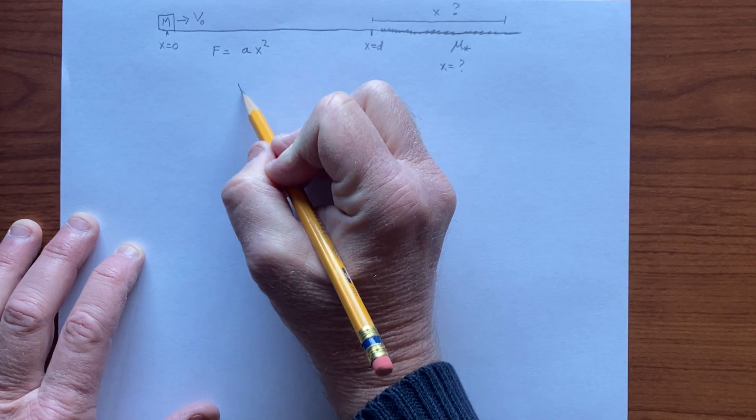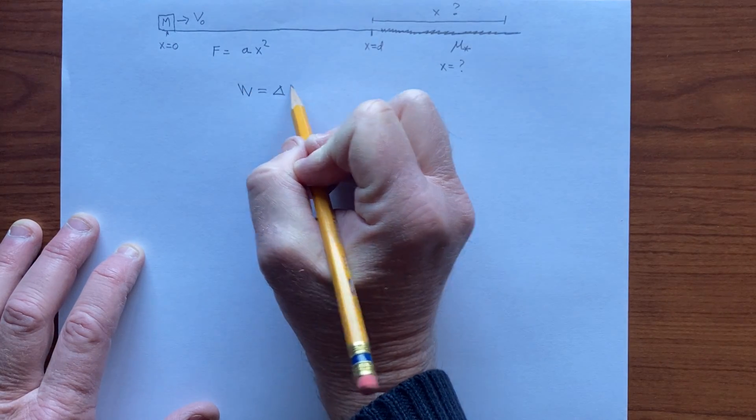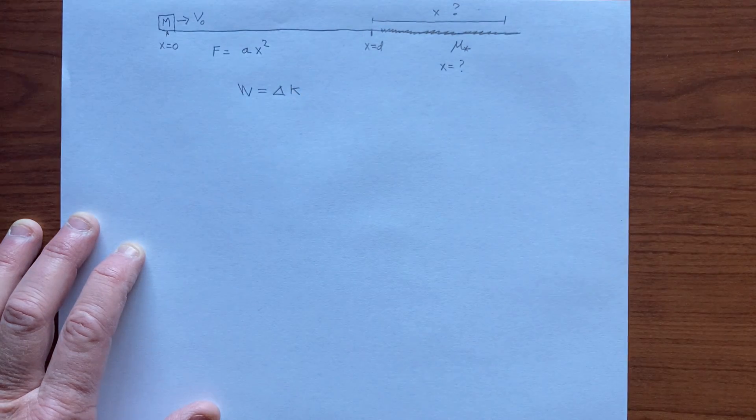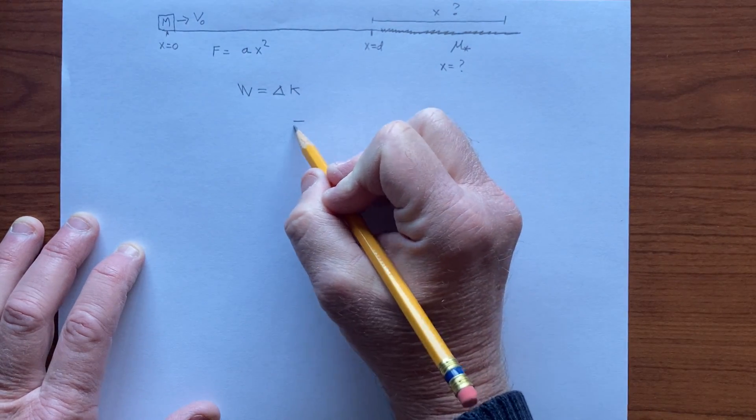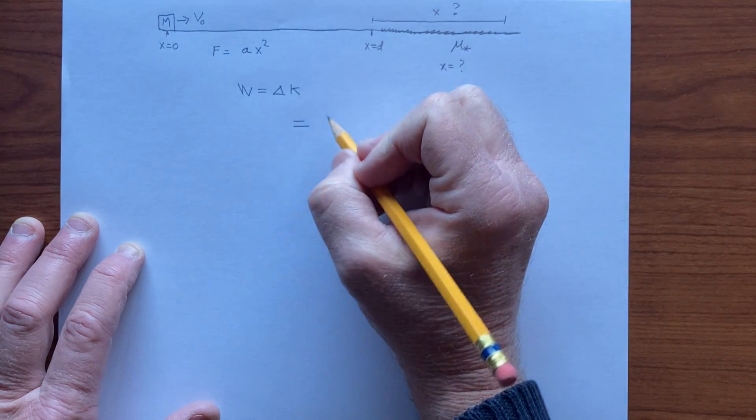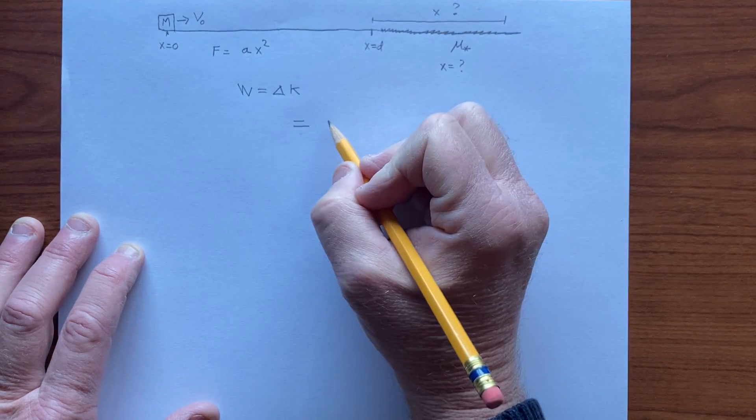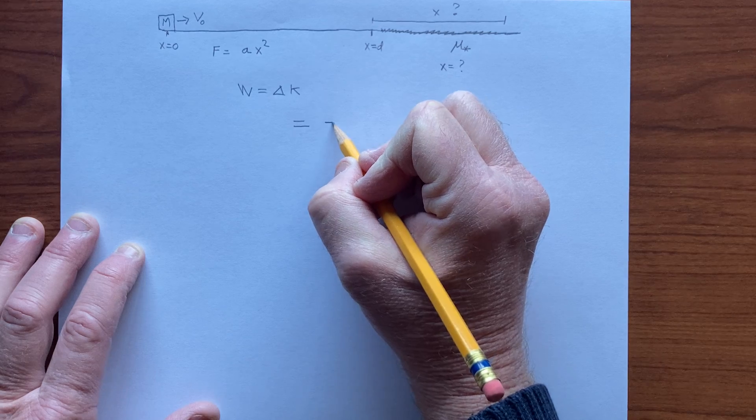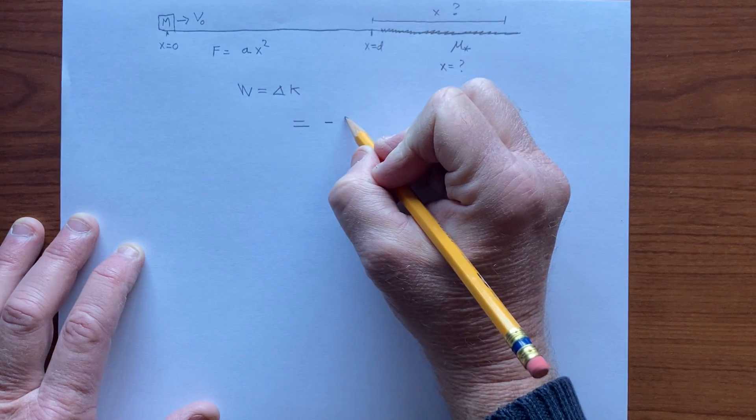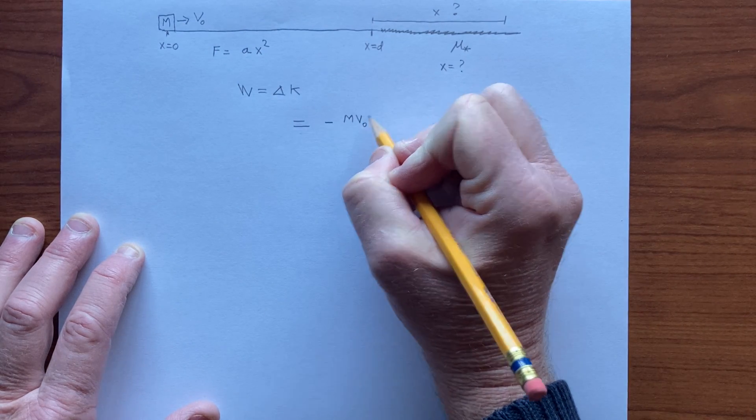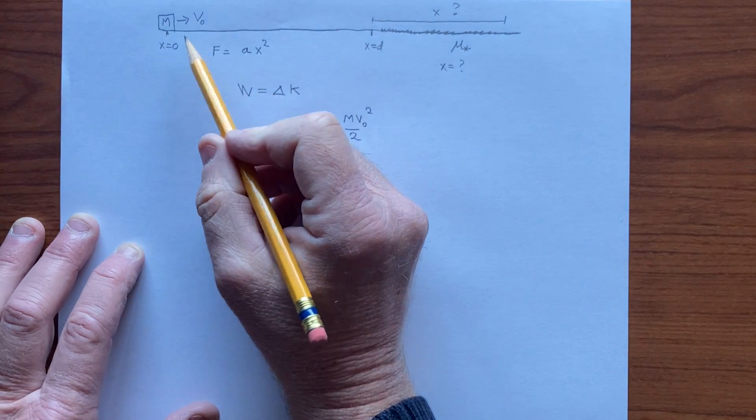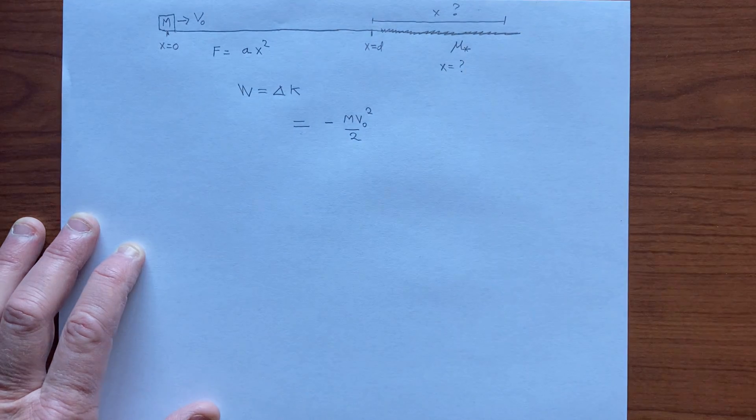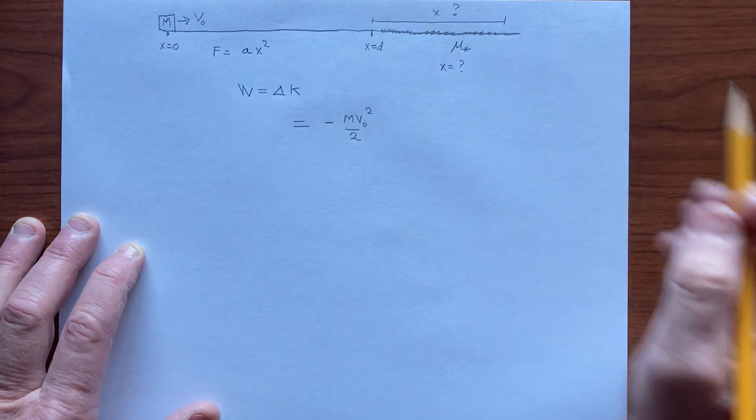So we can use work equals difference in kinetic energy. The kinetic energy is final minus initial, so the final kinetic energy is 0 minus the initial kinetic energy m v-naught squared over 2. The work has two parts, and this part is positive.